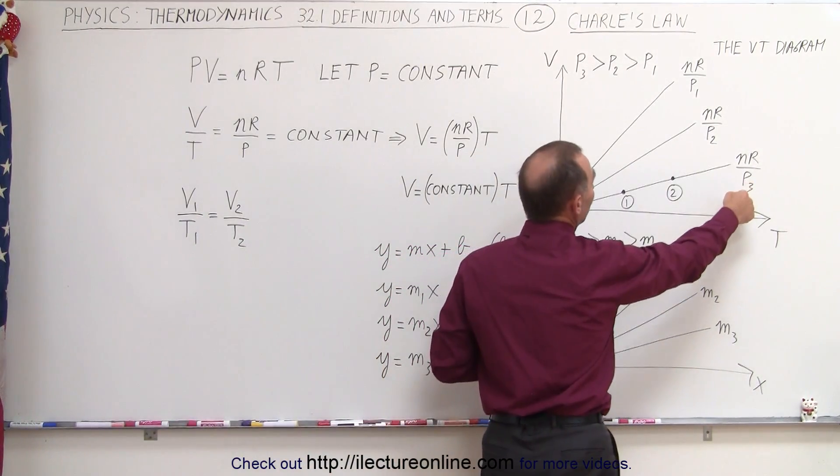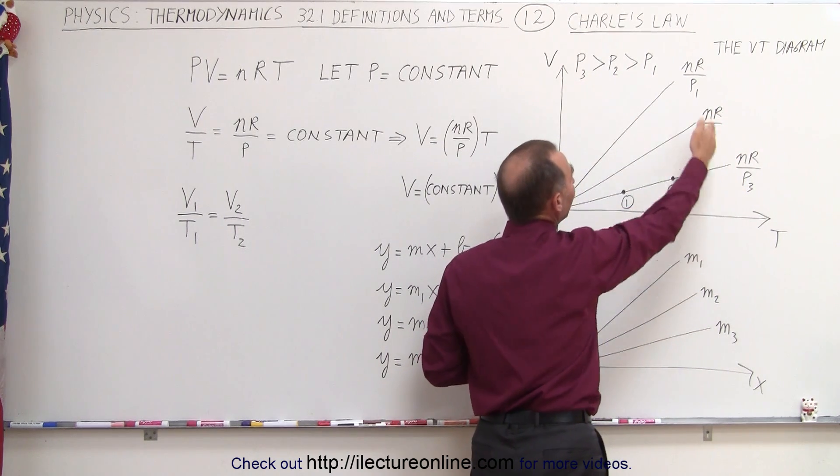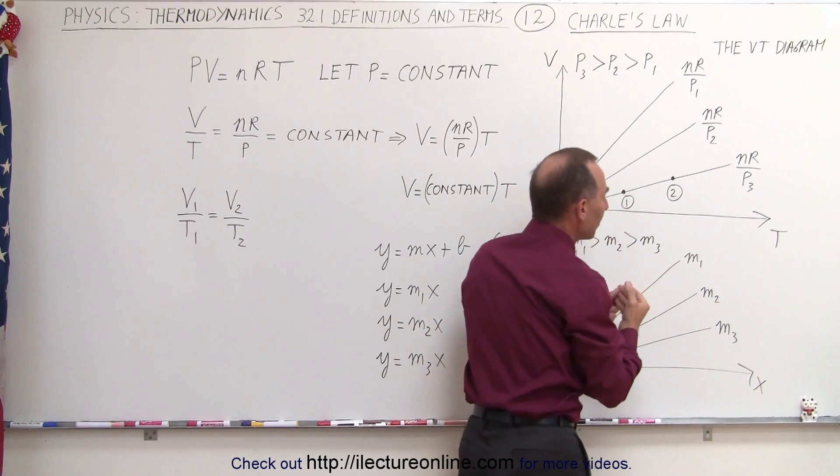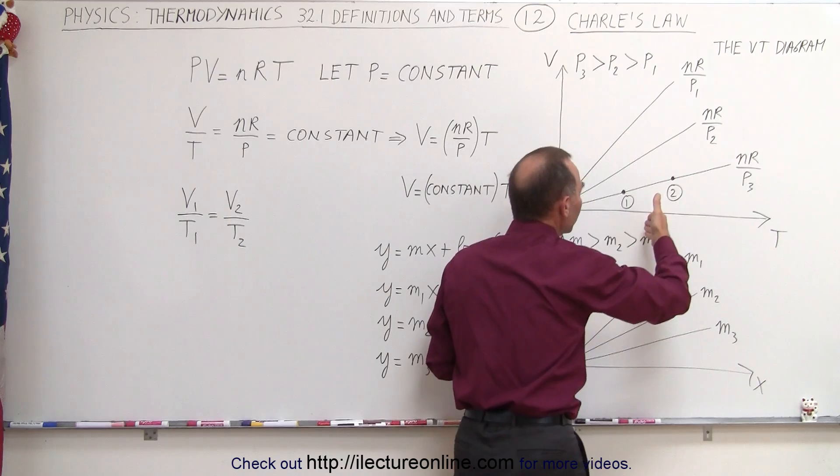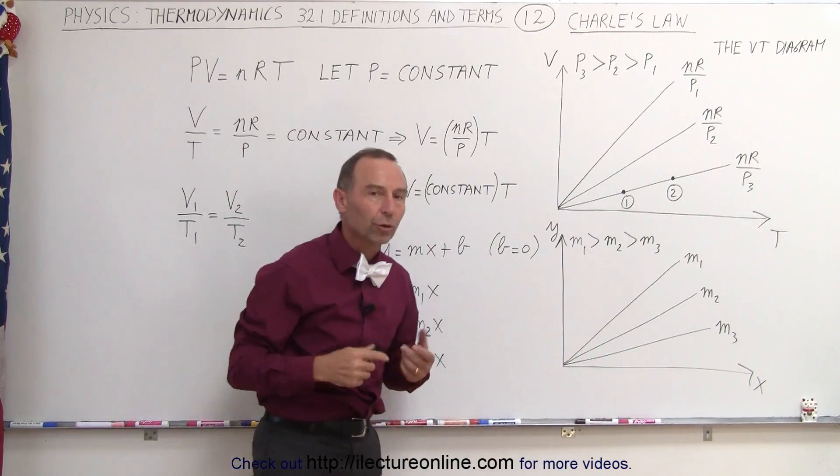The only thing that can change is that if the pressure increases, if P is larger, you'll have a smaller slope. And if P is smaller, you'll have a larger slope. That means when there is a smaller amount of pressure, as you increase the temperature, the volume will therefore increase by a greater proportion or greater amount.